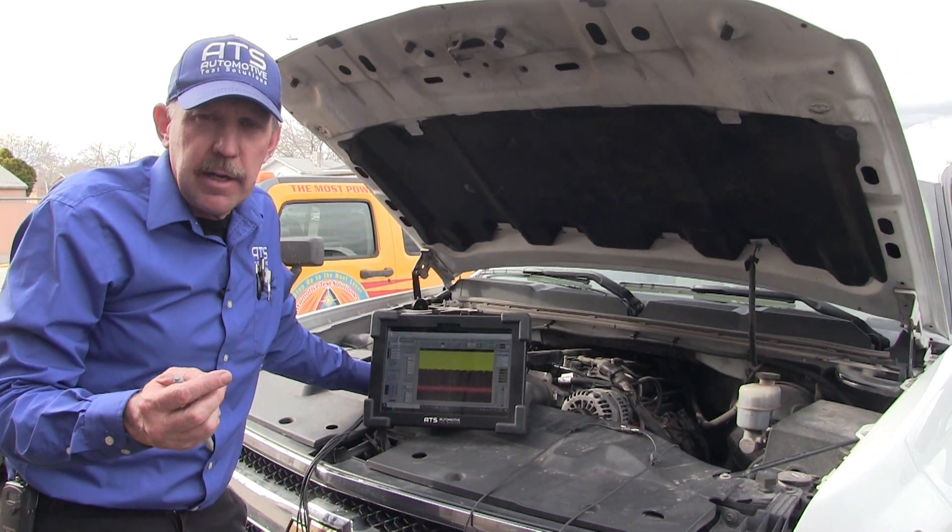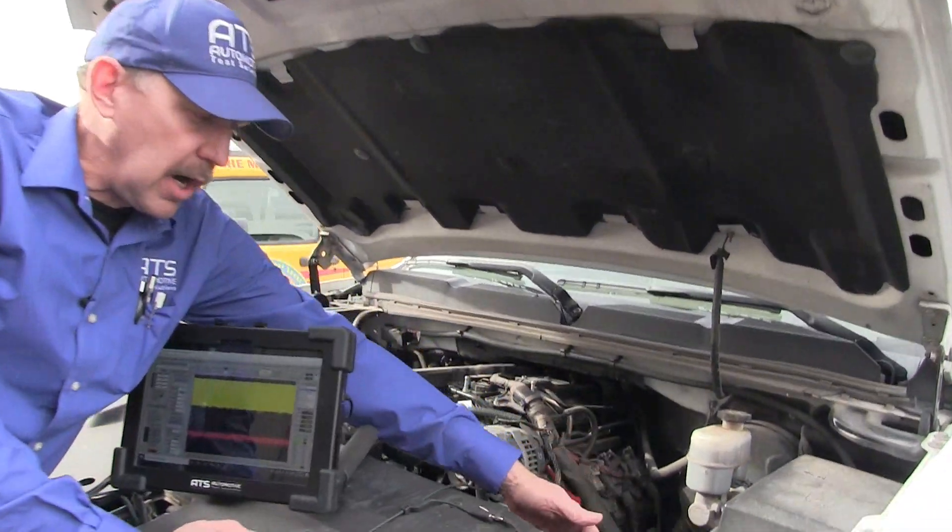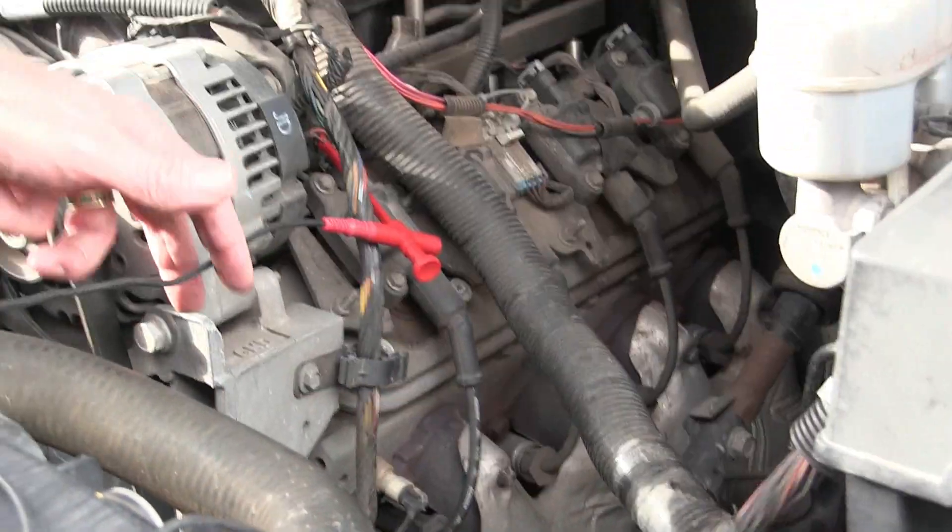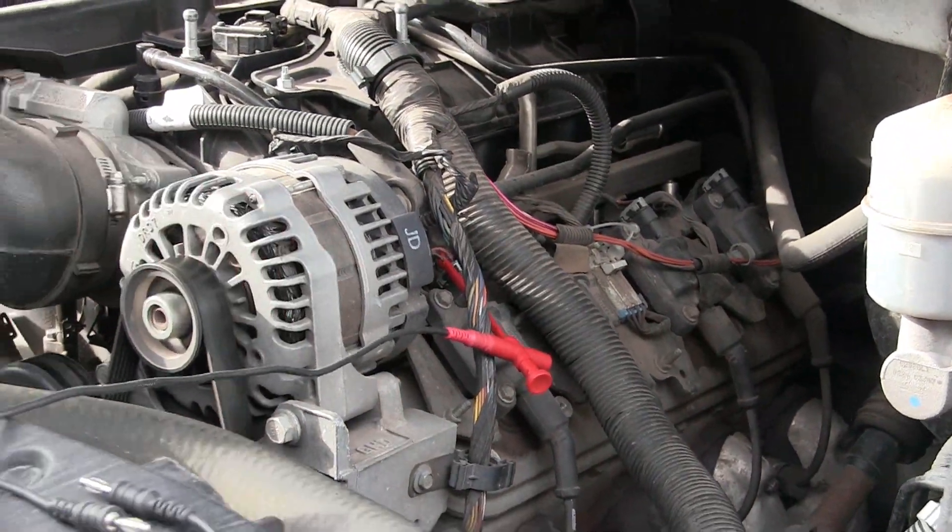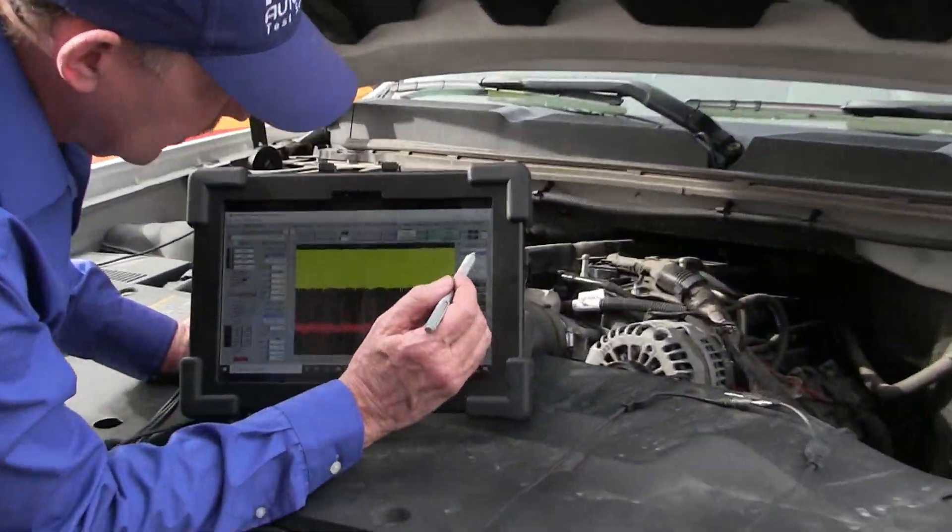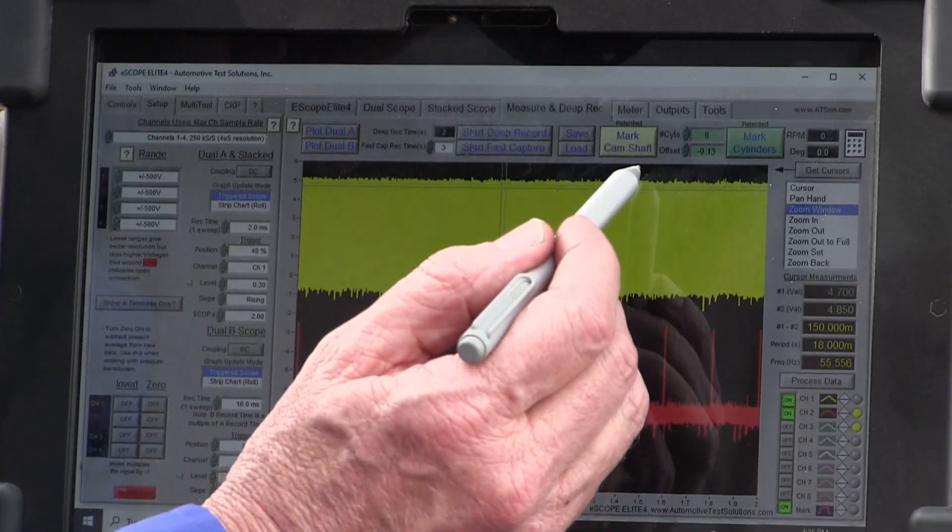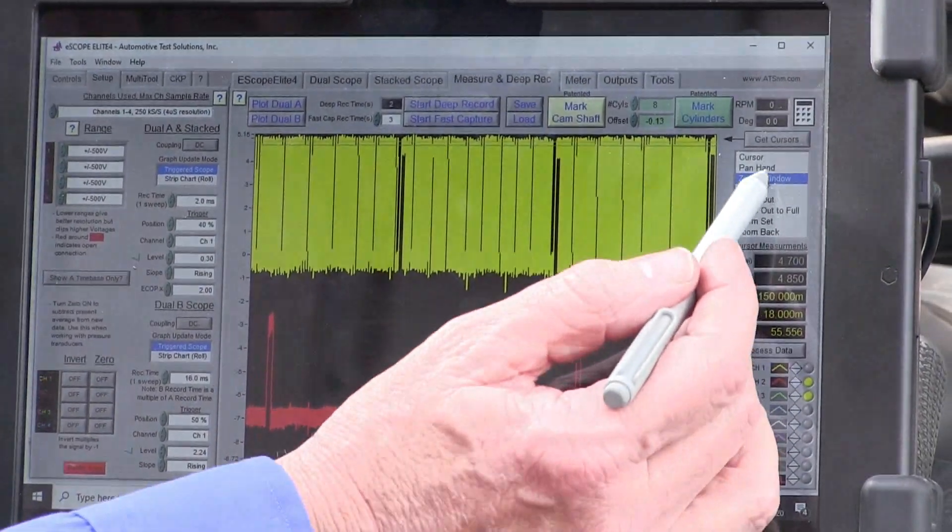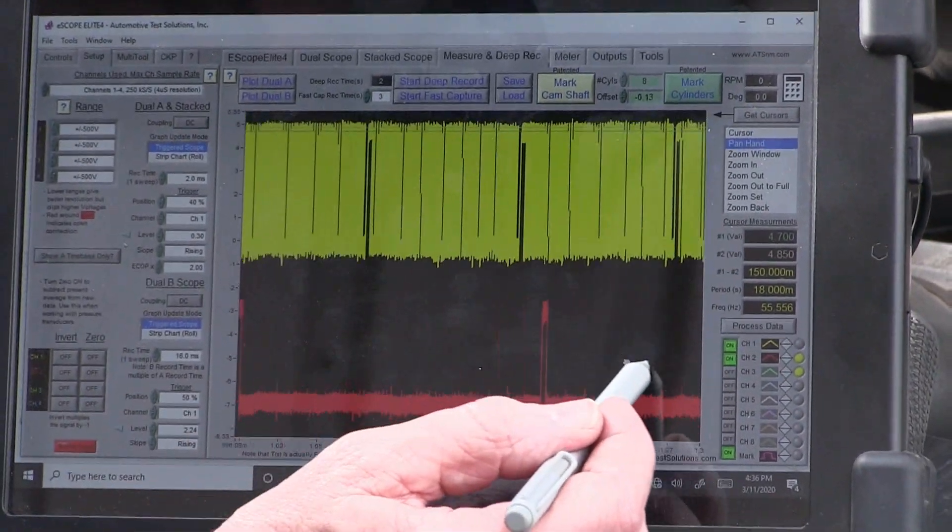So what we ended up doing is we've taken channel 1 and connected it to the CKP wire at the computer, and we've connected the other one to the number 1 ignition coil. We've recorded the data, and this is the data that all of us have been aware of for years. This is the crank sensor, and this is the ignition trigger.